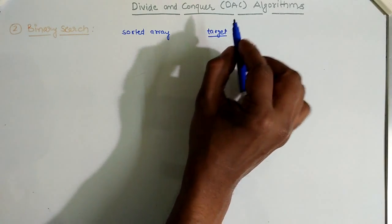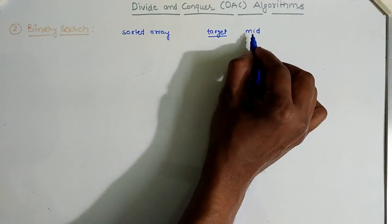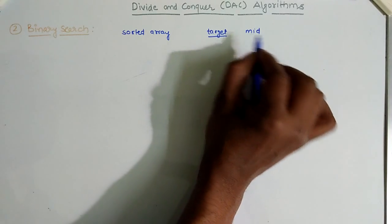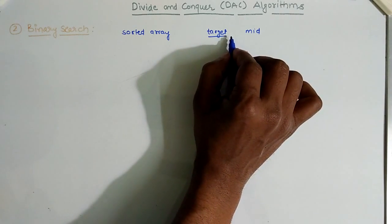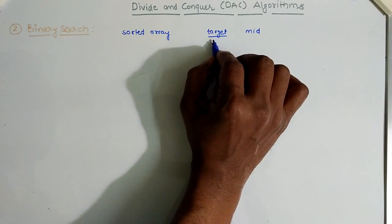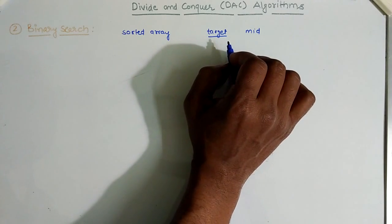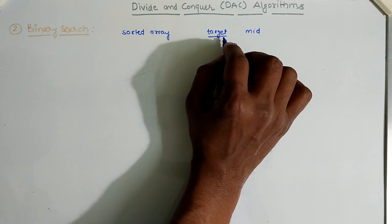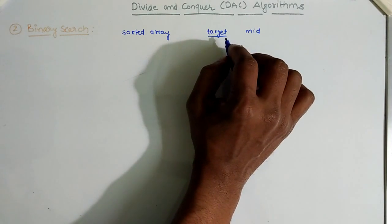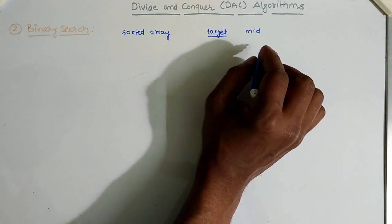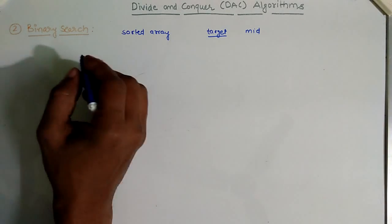Otherwise, we check whether the target value is less than or greater than the mid. If it is greater than mid, then we search the target element on the right side of the mid element. If it is lesser than the mid, then we search the target on the left side of the mid element. The recursive calling is made based on the target value, on either the left or right side of the array.